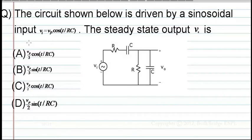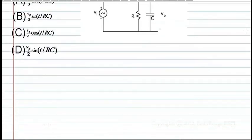The circuit shown below is driven by a sinusoidal input Vi equal to Vp times cos(T/Rt). The steady state output V_output is: The options given are (A) Vp/3 cos(T/Rt), (B) Vp/3 sin(T/Rt), (C) Vp/2 cos(T/Rt), (D) Vp/2 sin(T/Rt).